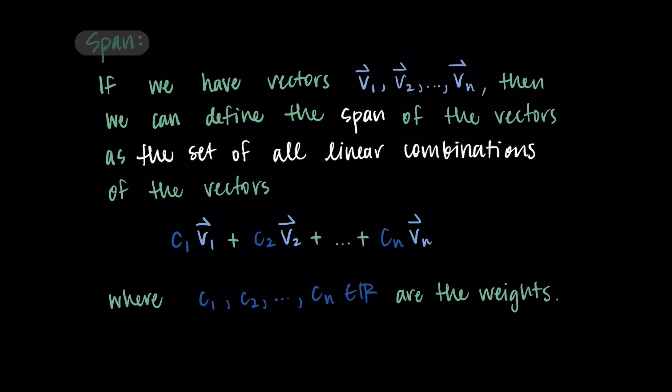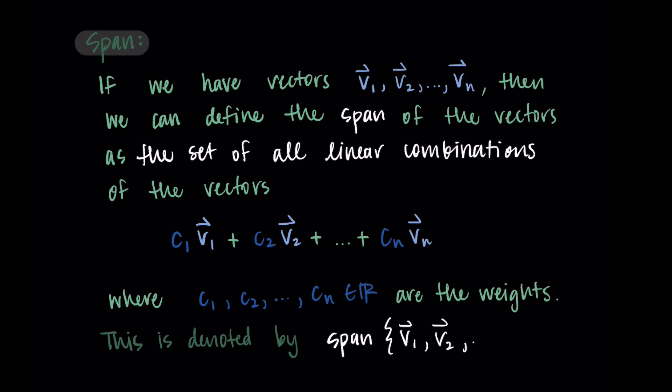So the span is the set of all possible linear combinations of the vectors. This means we're taking all possible weights — every possible linear combination by considering any scalar that's a real number and any combination of those scalars. To write this mathematically, we denote this by 'span' followed by curly braces and we write v1 through vn.